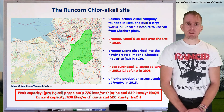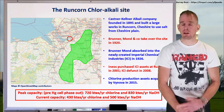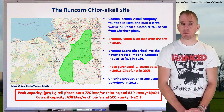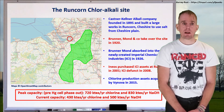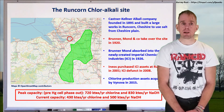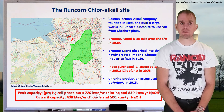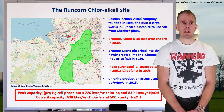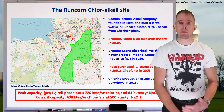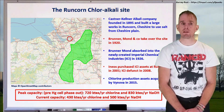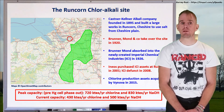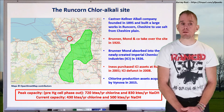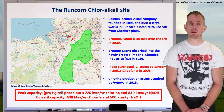The Runcorn site has a long history. It was taken over in the 1920s by Brunner Mond & Company, which was then absorbed into Imperial Chemical Industries (ICI) when it was formed in 1926. ICI was dissolved in the early 2000s, after which INEOS purchased the ICI chlorine assets at Runcorn, and these were subsequently acquired by Vinova in 2015. The peak capacity prior to mercury cell phase-out was 720,000 tonnes per year of chlorine and 830,000 tonnes per year of caustic soda. Current capacity is 430,000 tonnes per year of chlorine and 500,000 tonnes per year of caustic soda.